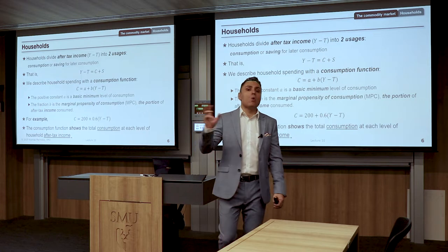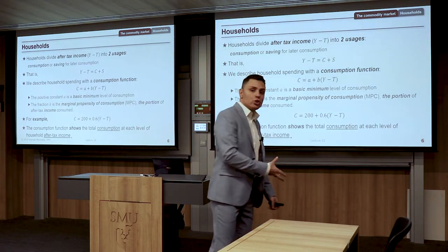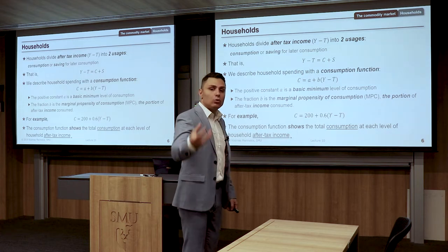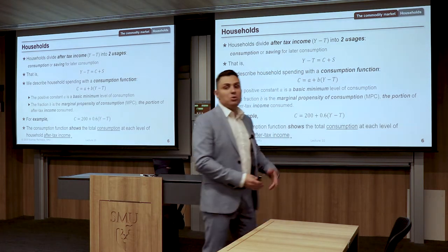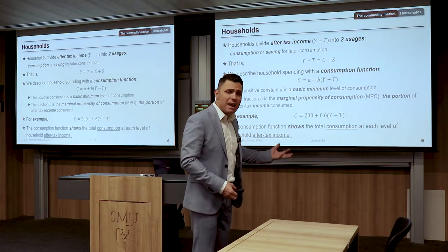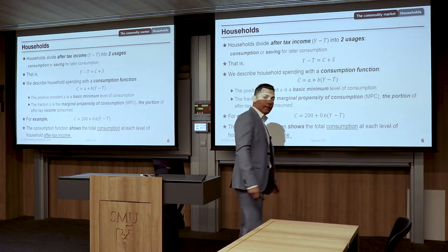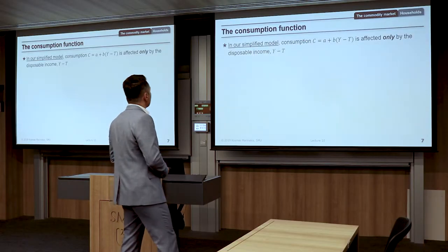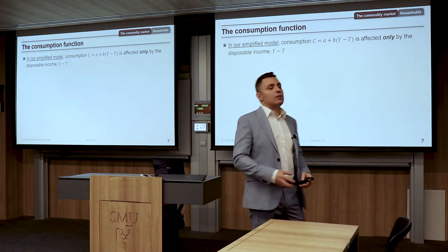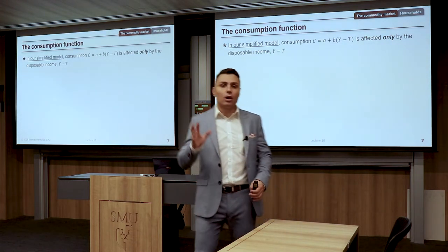The consumption function tells me total consumption for every level of after-tax income. In our simplified model, consumption is affected only by disposable income — no other factor matters within this particular consumption function. In reality, however, our consumption is affected by various factors. The real interest rate affects consumption inversely because a higher interest rate makes saving more attractive.